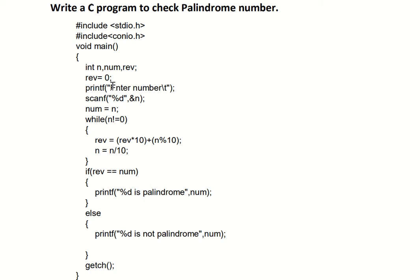Now let's go ahead with the programming part. We have #include stdio.h and #include conio.h as header files. After that, the void main function opens, and we declare some integer variables: num, reverse (short form rev), and n. The value of reverse is initialized to zero. Then printf asks the user to enter a number, and scanf with %d and ampersand n stores the entered number into variable n.